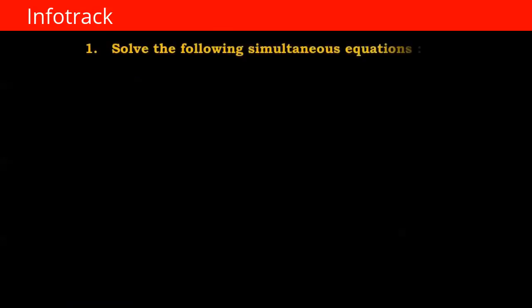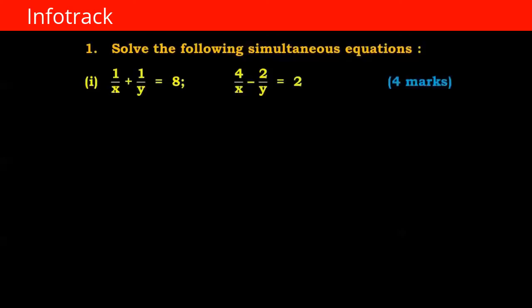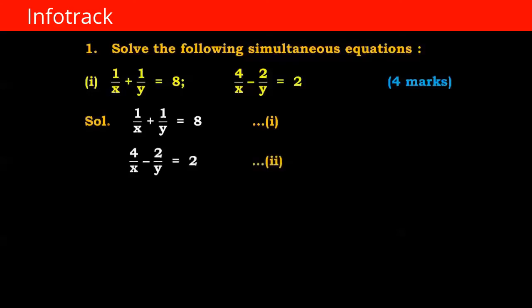Question number 1: Solve the following simultaneous equations. The equations are 1 upon x plus 1 upon y is equals to 8 — consider this as equation number 1. And 4 upon x minus 2 upon y is equals to 2 — equation number 2.